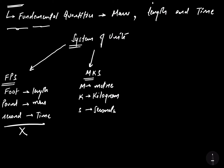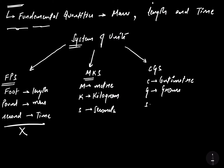The third system of units is CGS. Here C stands for centimeter, G stands for gram, and S stands for second. Different countries are following different types of sets of units.